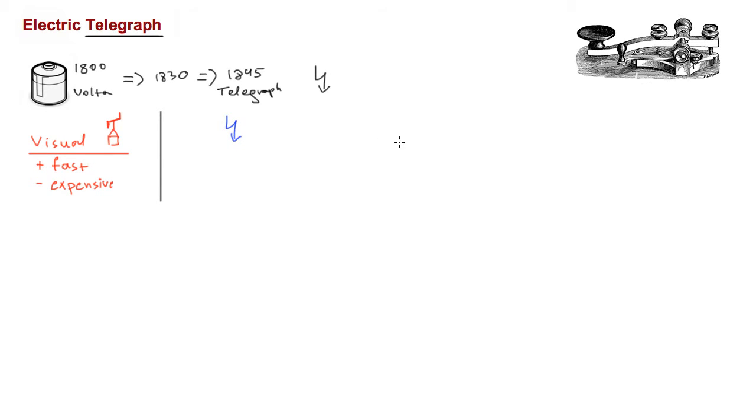To send a message with the electric telegraph from point A to point B, we would need a copper cable between A and B to send our electric signals. The difference is that unlike the visual telegraph, which needed many stations along the way, the copper cable could carry our signal anywhere from tens to even thousands of kilometers without the need for repeat stations, which meant it became a lot cheaper to send messages.